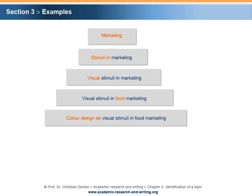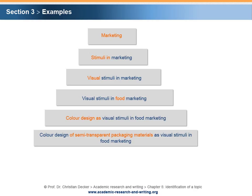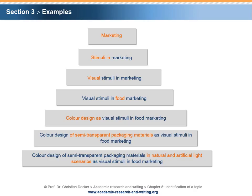Since color design can be applied to a variety of product features, she narrows the topic down to 'color design of semi-transparent packaging materials as visual stimuli in food marketing.' She decides to conduct experiments with test persons in different environments, and therefore adjusts the topic to 'color design of semi-transparent packaging materials in natural and artificial light scenarios as visual stimuli in food marketing.' This pyramid demonstrates how a topic in an academic setting can be refined in order to assume a final shape.